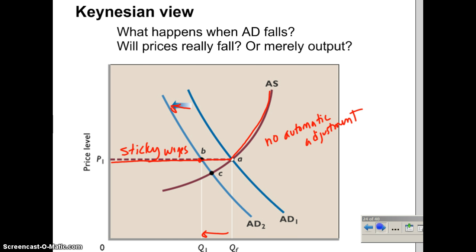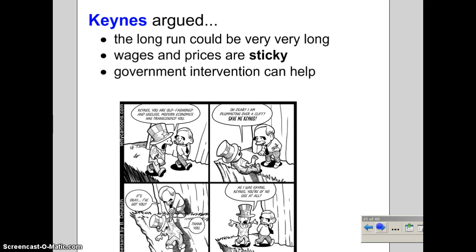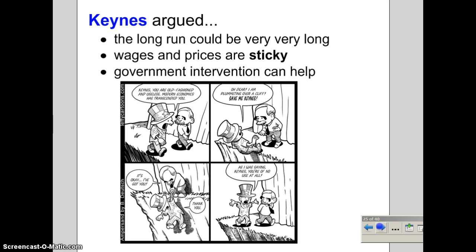To sum up: John Maynard Keynes argued that the long run could be very, very long and we don't know how long adjustment would take. Wages and prices are sticky, so there is no self-correction. Government intervention can help. He published his General Theory in 1936 and made a huge impact on the economics profession. Keynes was very popular for a long time — there's a saying 'we're all Keynesians now' — though he has somewhat fallen out of favor, and we'll talk more about how the experience of the 1970s shaped views of Keynes.